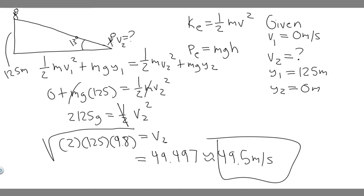So 49.5 meters per second is going to be the velocity of the person at the bottom of the incline. This is your answer — hopefully you found this video useful.